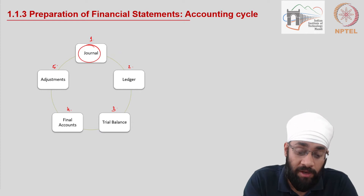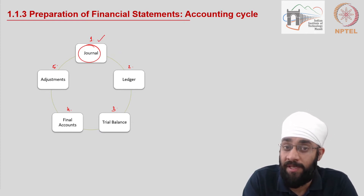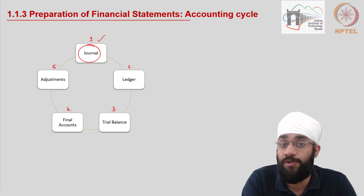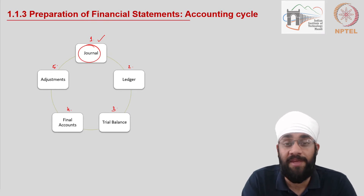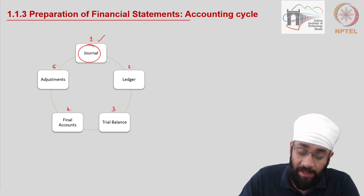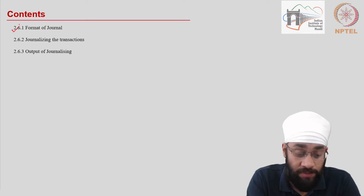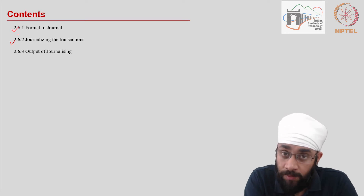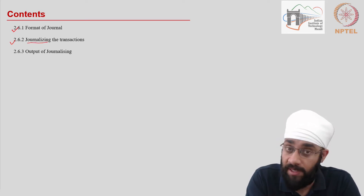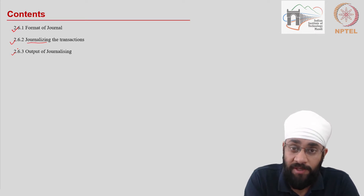The first book of accounting is called a journal. Any transaction as it takes place in the business is recorded in this first book called journal. Therefore, if you look at a journal of a business, you will see transactions in chronological order. In this video, we are going to look at the format used for this book, the process used to write transactions in this book — the process called journalizing — and finally, how a journal looks after you have recorded the transactions. So let us get started.